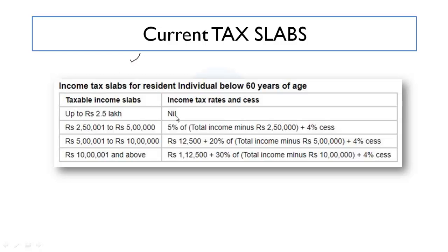The tax slabs are: up to Rs. 2.5 lakh — no tax; Rs. 2.5 lakh to Rs. 5 lakh — 5%; Rs. 5 lakh to Rs. 10 lakh — 20%; above Rs. 10 lakh — 30%. What the government changed is that up to Rs. 5 lakh there is no income tax required due to the full rebate. However, if your income exceeds Rs. 5 lakh, you will fall under the regular tax slabs starting from Rs. 2.5 lakh. If you are below Rs. 5 lakh, this budget is very beneficial for you.